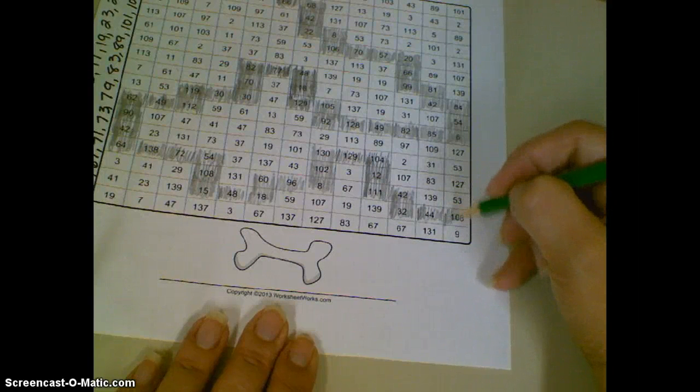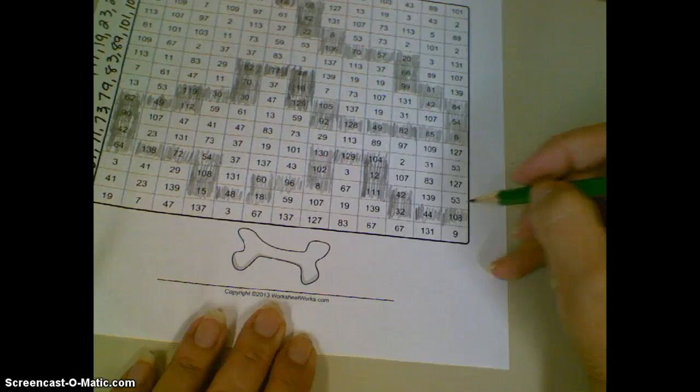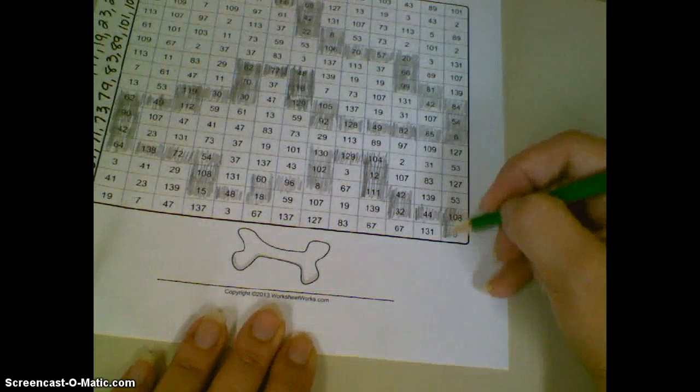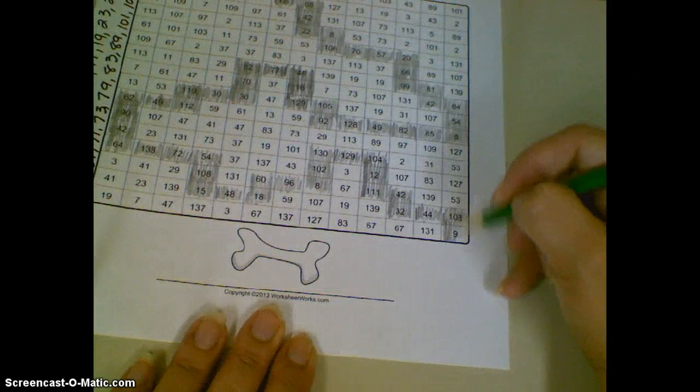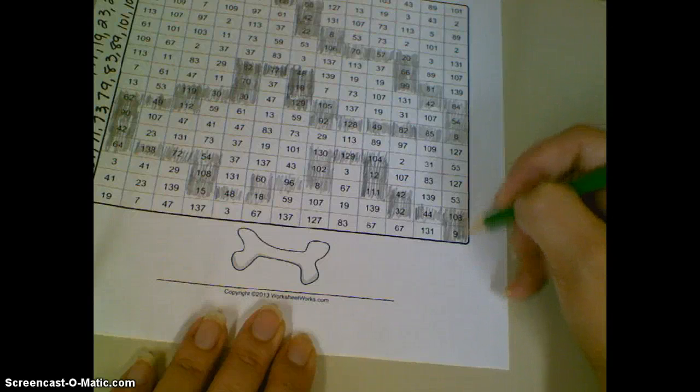Another even one, so we know it's divisible by 2. And then our last one, where we finally make it down, is our 9. 3 times 3 is 9.